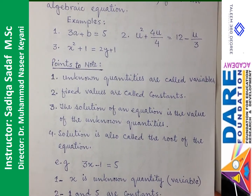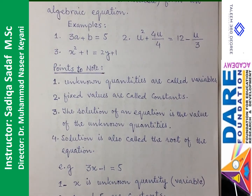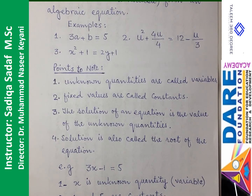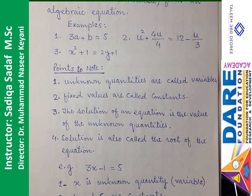Points jo humne yahan se seekhne hain: Number 1 — unknown quantities are called variables. In teenon mein agar aap dekhein, to jo unknown quantities hain woh variable kahlayengi. Pehli mein A aur B hain, doosri example mein U hai, aur teesri example mein X aur Y bhi hain. Yeh unknown quantities hain — inki value humein maloom nahin. Yeh hamare paas variables kahlaate hain.